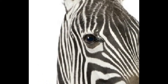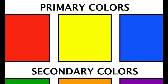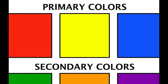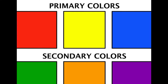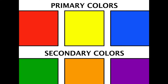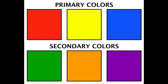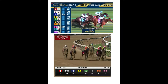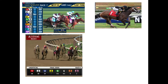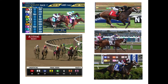Most of us will remember this colorful chart from early on in grade school — our primary and secondary colors. In horse racing in North America, with very few exceptions, red, white, and blue represent 1, 2, and 3.